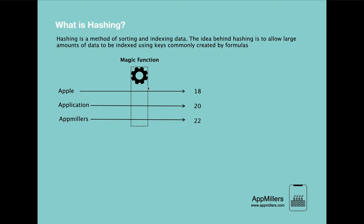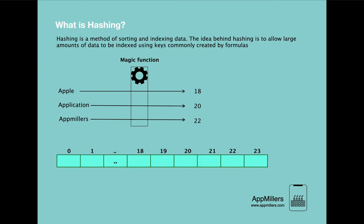The next step is to store these numbers in a data structure. We have an array or Python list with 24 cells. Using the numbers generated by the magic function, we insert the strings into this array. For the first string, apple, we have 18, so we insert apple at index 18.